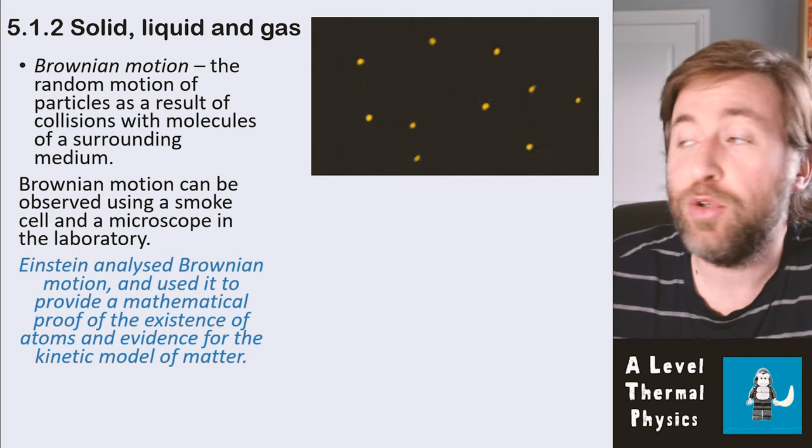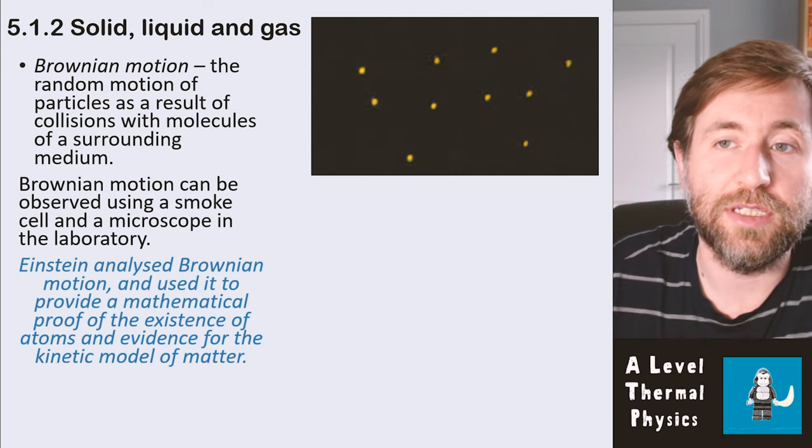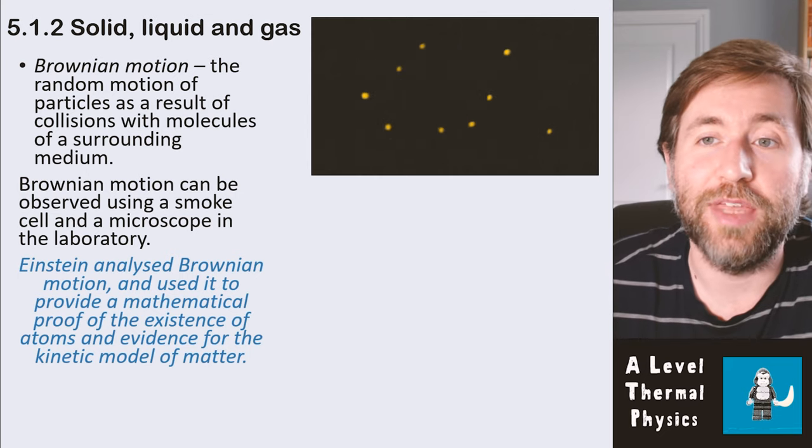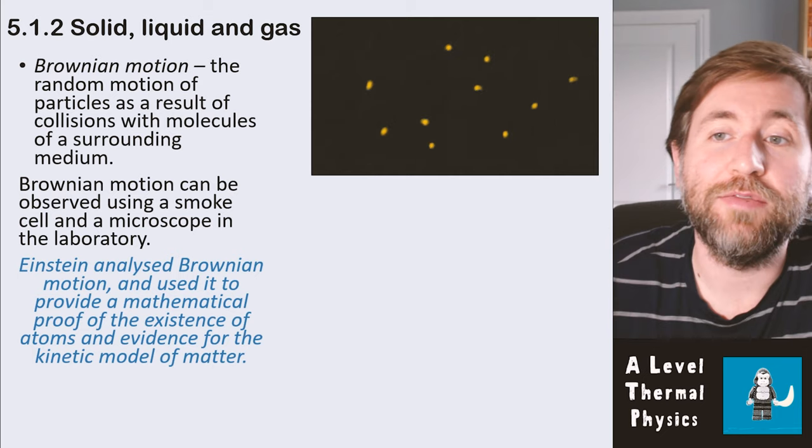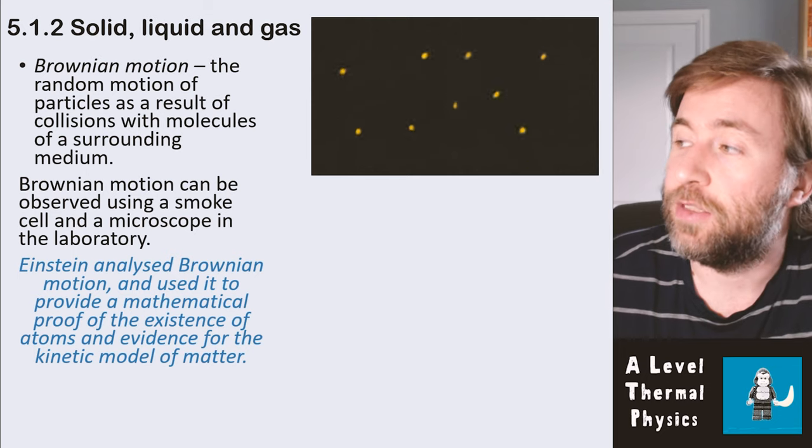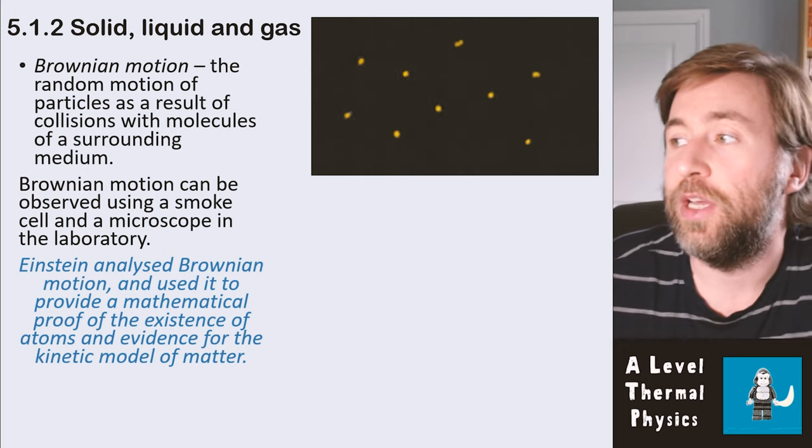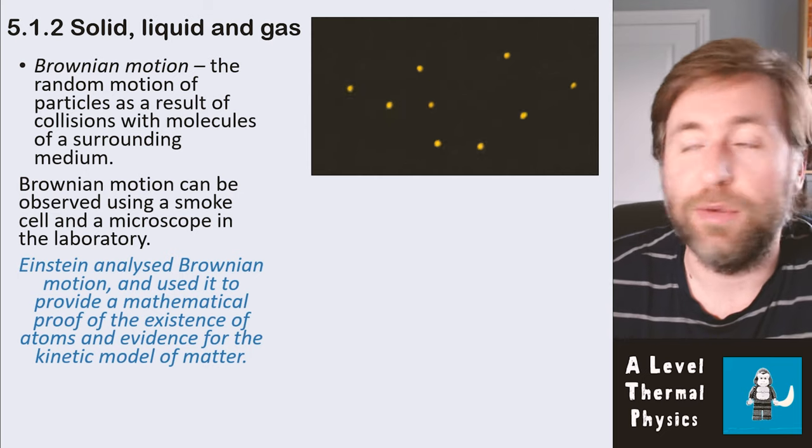In maths they have proofs, and in science we have evidence. You think about these smoke particles being rather large compared to the particles we can't see under the microscope—the particles of the air. The reason why they have this zigzagging motion is because they're constantly being bombarded by the air particles around them. Einstein was able to do the maths to show that the way in which they moved could be due to the other atoms and molecules that were present in that smoke cell.